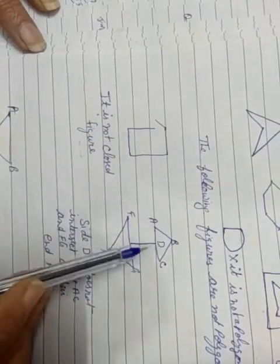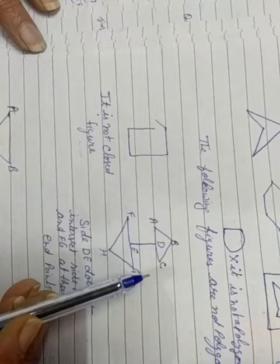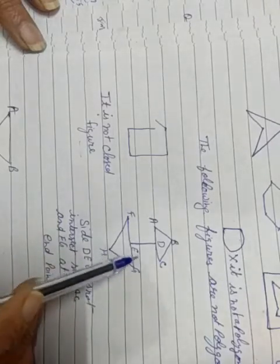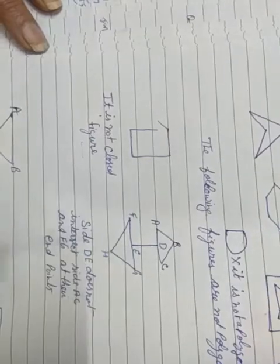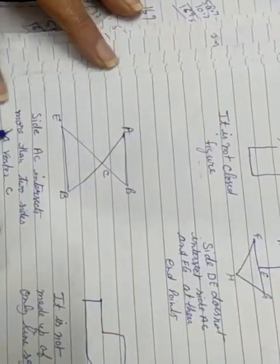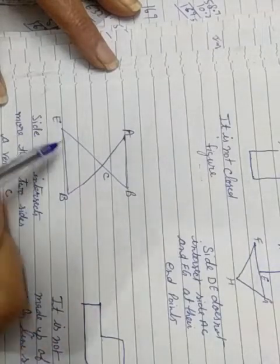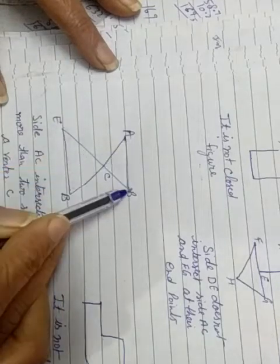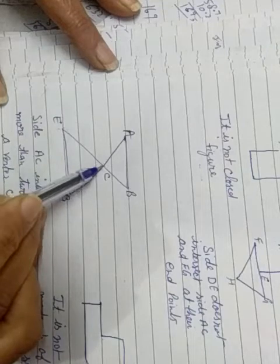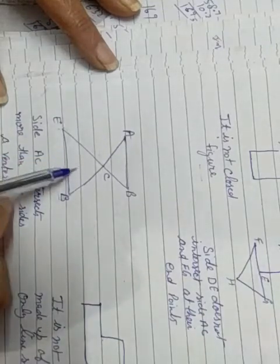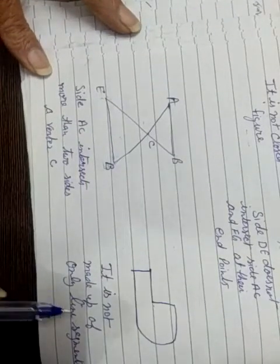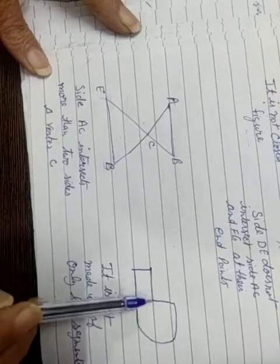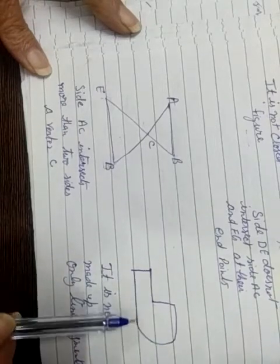In this figure, it is closed but the sides do not intersect properly. Here, the side intersects more than two sides at vertex C. It is closed but it is not a polygon because of this intersection issue.